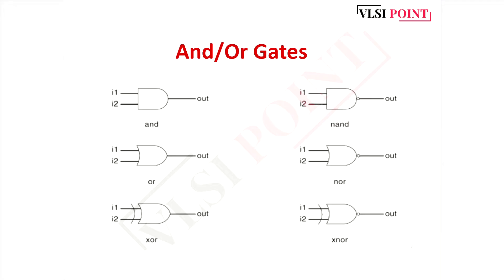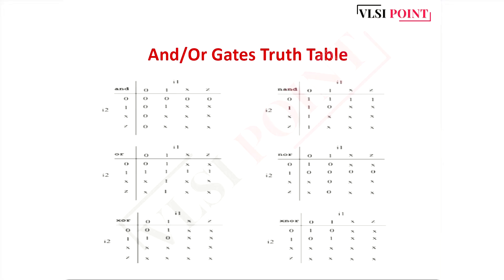Different gates have different symbols. Talking about the truth tables, four different values are considered: 0, 1, x, and z. According to the gate, you get the corresponding output. Since these are very basic gates that we generally use, I hope these truth tables are clear to you.